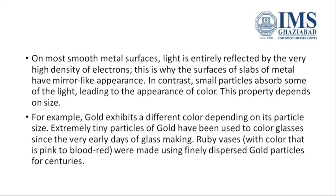Smooth metal surfaces reflect light entirely because of the high density of electrons, which is why metal slabs have a mirror-like appearance. In contrast, small nanoparticles absorb light, leading to a change in color appearance, and this property also depends on size. So gold exhibits a different color depending upon the particle size.